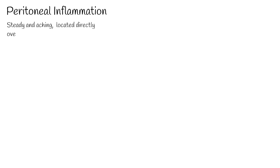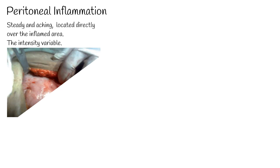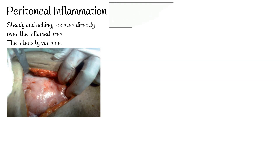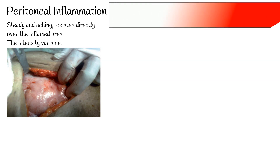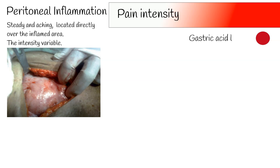The pain of parietal peritoneal inflammation is steady and aching, located directly over the inflamed area. The intensity of the pain is dependent on the underlying cause. Gastric acid leaking into the peritoneal cavity causes much more pain than contaminated neutral feces. Blood and urine are normally mild irritants, so exposure of blood and urine to the peritoneal cavity may go unnoticed unless it is sudden and massive.